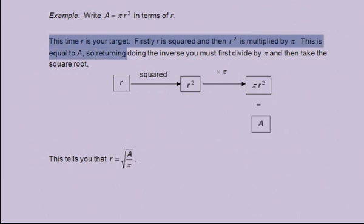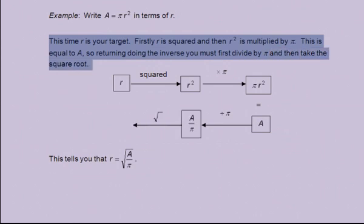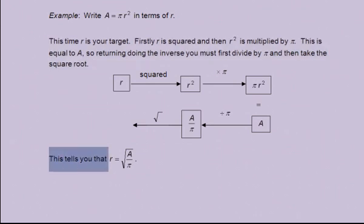So returning, doing the inverse, you must first divide by π, to give A/π. And then take the square root. This tells you that r equals the square root of A/π.